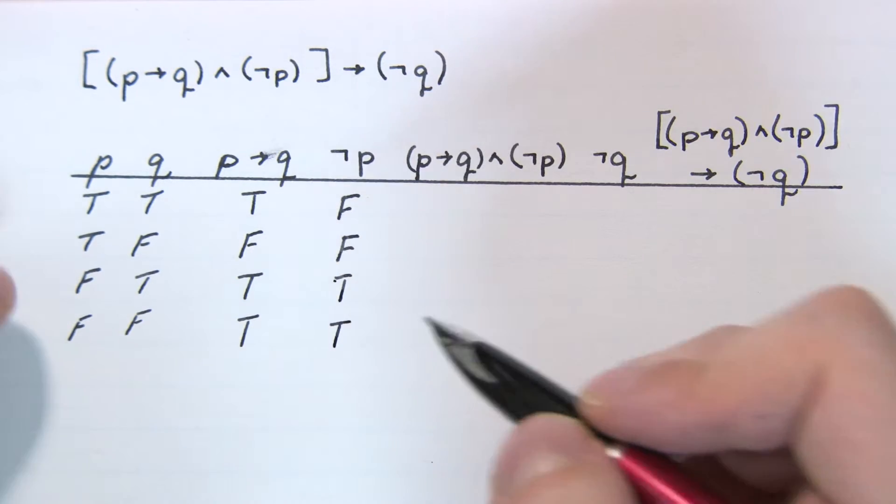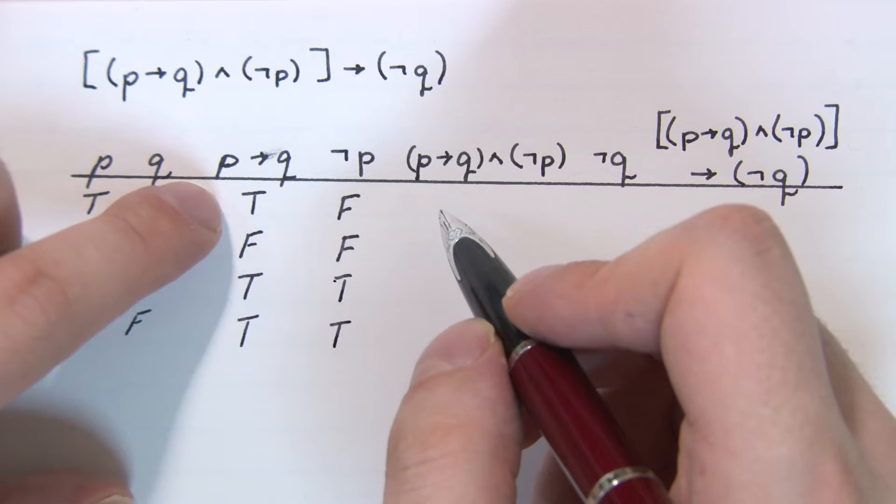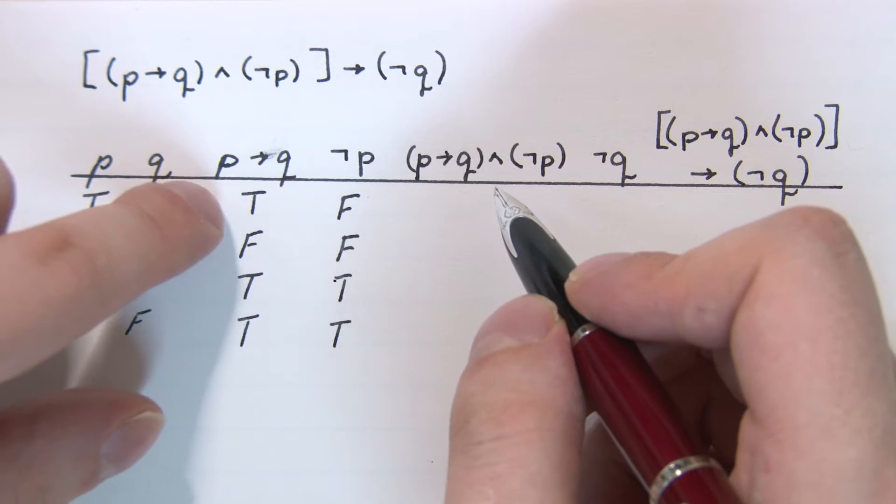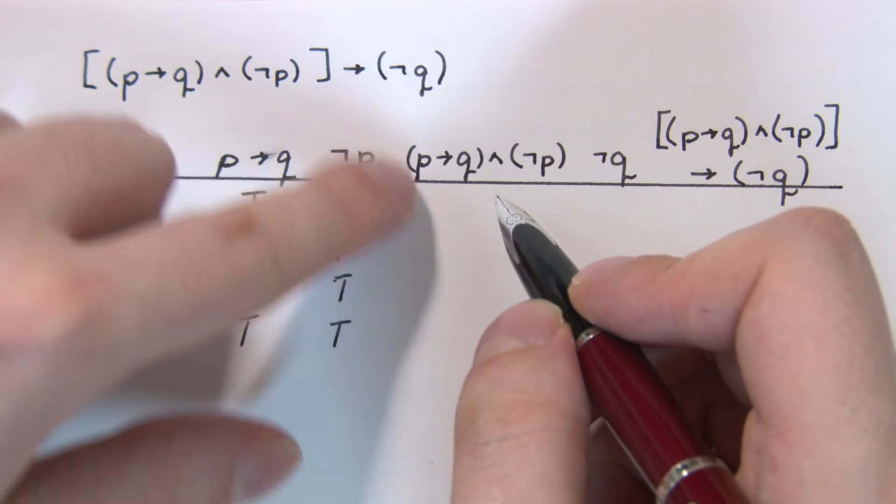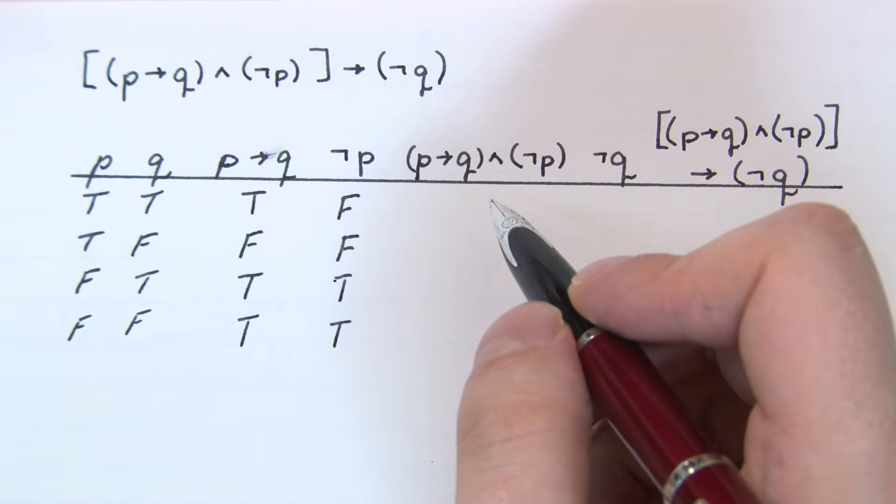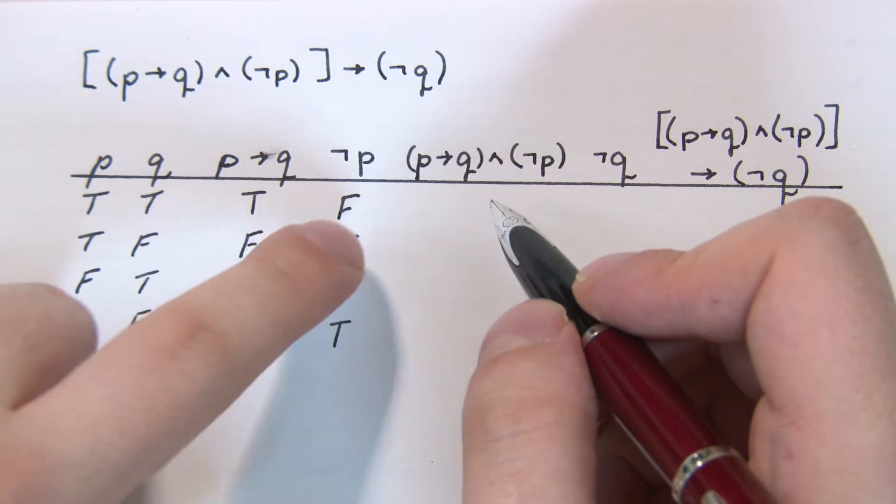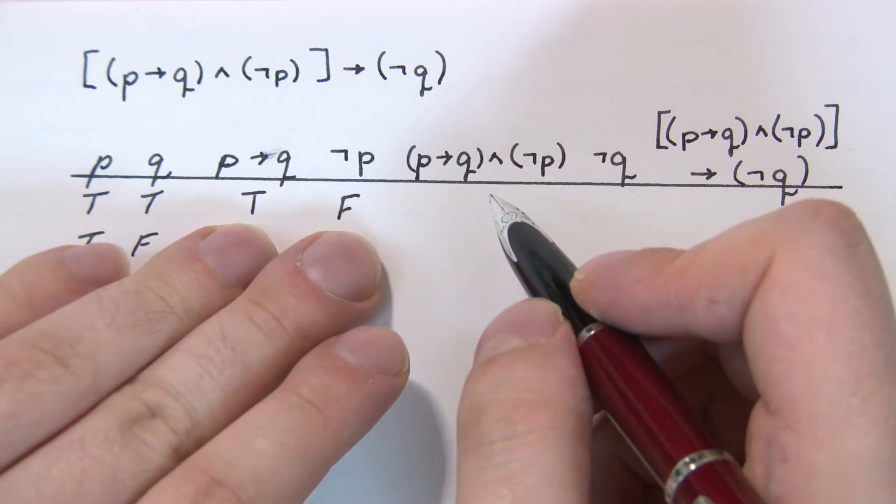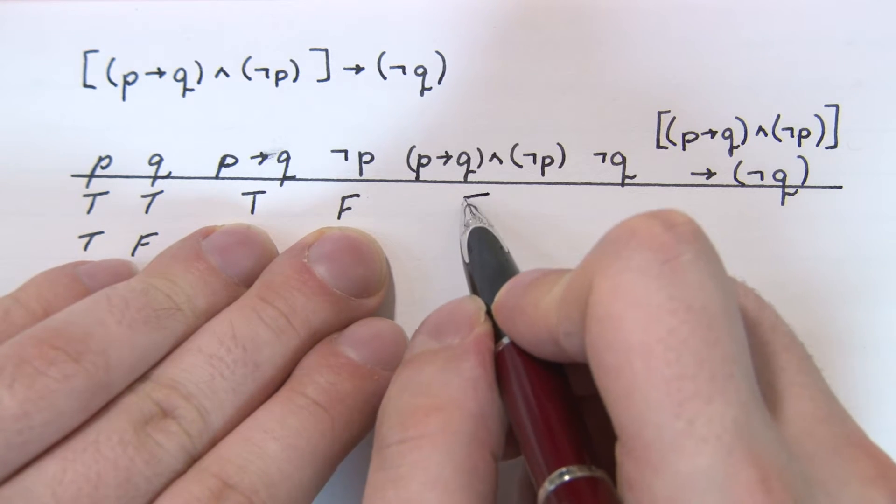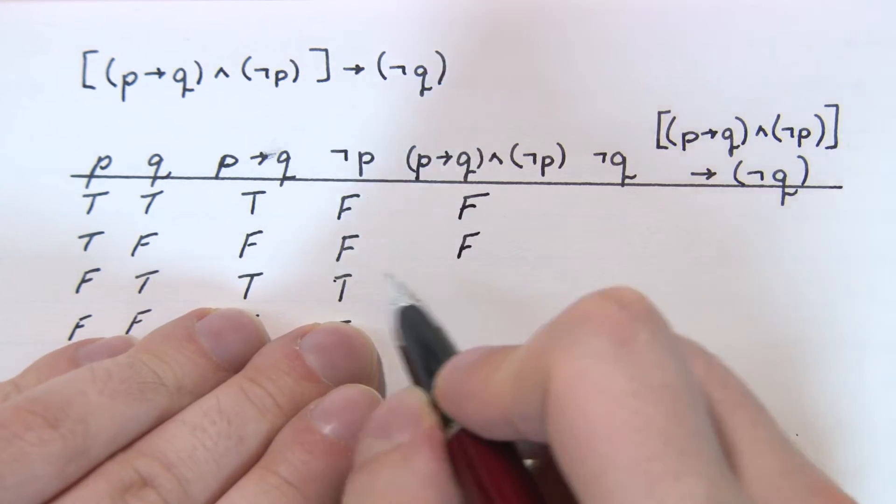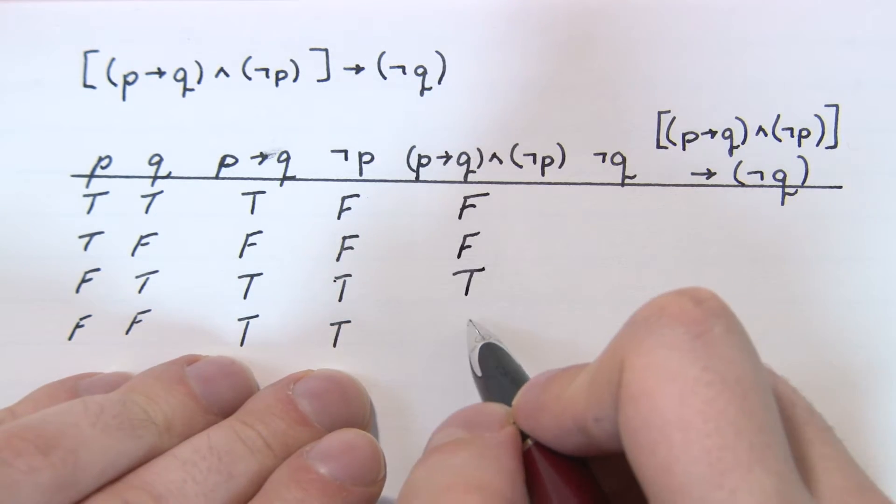And the next part is we have the conjunction, or the and operator. We take these two columns here and apply the conjunction operator. The conjunction operator returns a true value only when both of these are true. So true and false - that's false. False and false - that's definitely false. True and true - that's true.